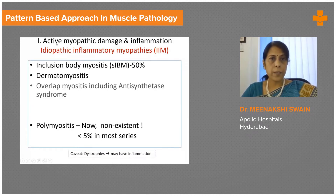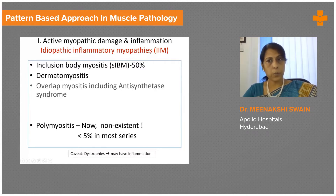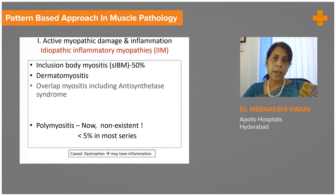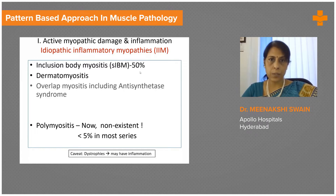Category one is when there's active muscle damage with associated inflammation. Under this umbrella comes the large group of idiopathic inflammatory myopathies. This is an important diagnosis to make because many of them can be treated — it is the treatable component. Having said that, the commonest of this group is inclusion body myositis, which is often resistant to routine steroid therapy and might need aggressive immunosuppression, and yet they may not respond. So it's very important to make the diagnosis right.